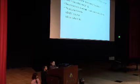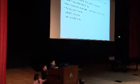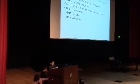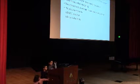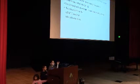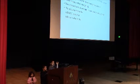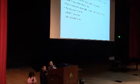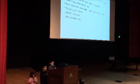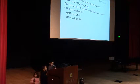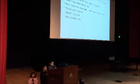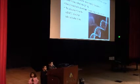DNA: a molecule that contains the information to make proteins, found in each cell of a living thing. The chemical units are arranged in a particular sequence or order. The sequence forms the genetic code that tells cells what to do. This is a picture of the DNA.